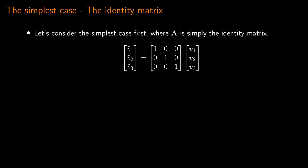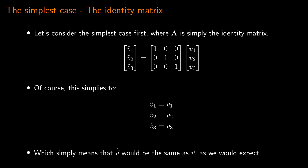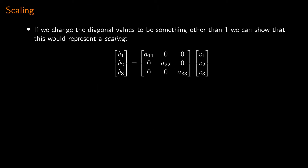The simplest case would be where A is simply an identity matrix. This simplifies to V-hat-1 equals V1, V-hat-2 equals V2, and V-hat-3 equals V3 - exactly as we would expect. The transform matrix A has done nothing; it has left the vector V completely unchanged. That leads us neatly to scaling. If we change the diagonal values to something other than 1 - replacing them with A11, A22, and A33 - that gives us a scaling operation.